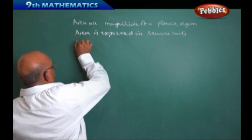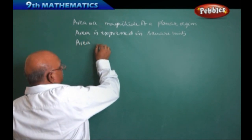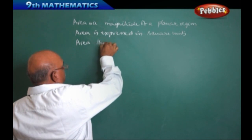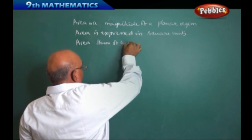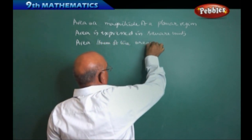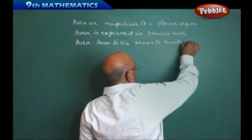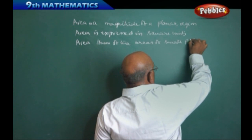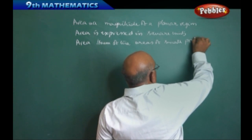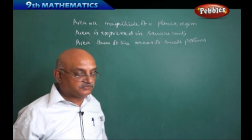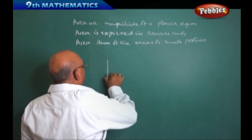Area is a sum of the areas of small portions. This is the basic idea behind this. Small portion means, for example, if I have like this, if I have the figure like this T.